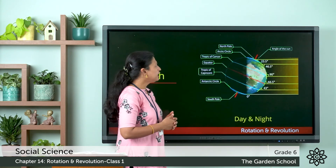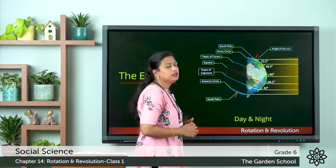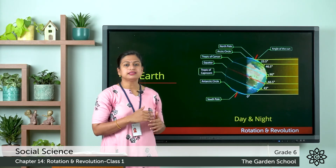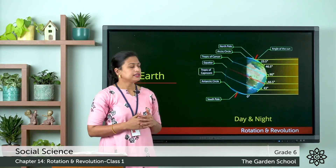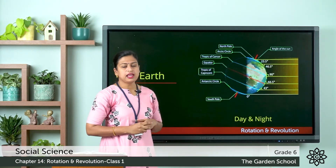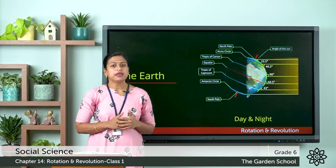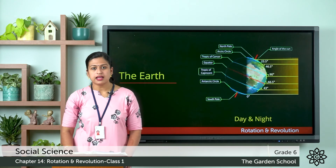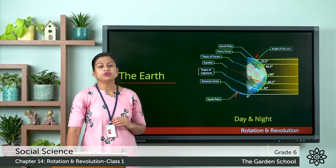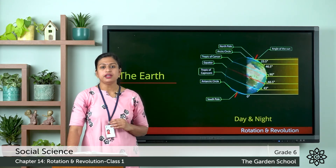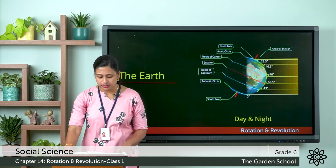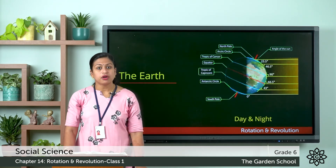In the Arctic circle in the northern hemisphere it is completely day — the sun will not set. In the Antarctic circle in the southern hemisphere it remains night where the sun does not rise. You can see the difference in the duration of day and night due to the inclination of the earth's axis. So this was about rotation.